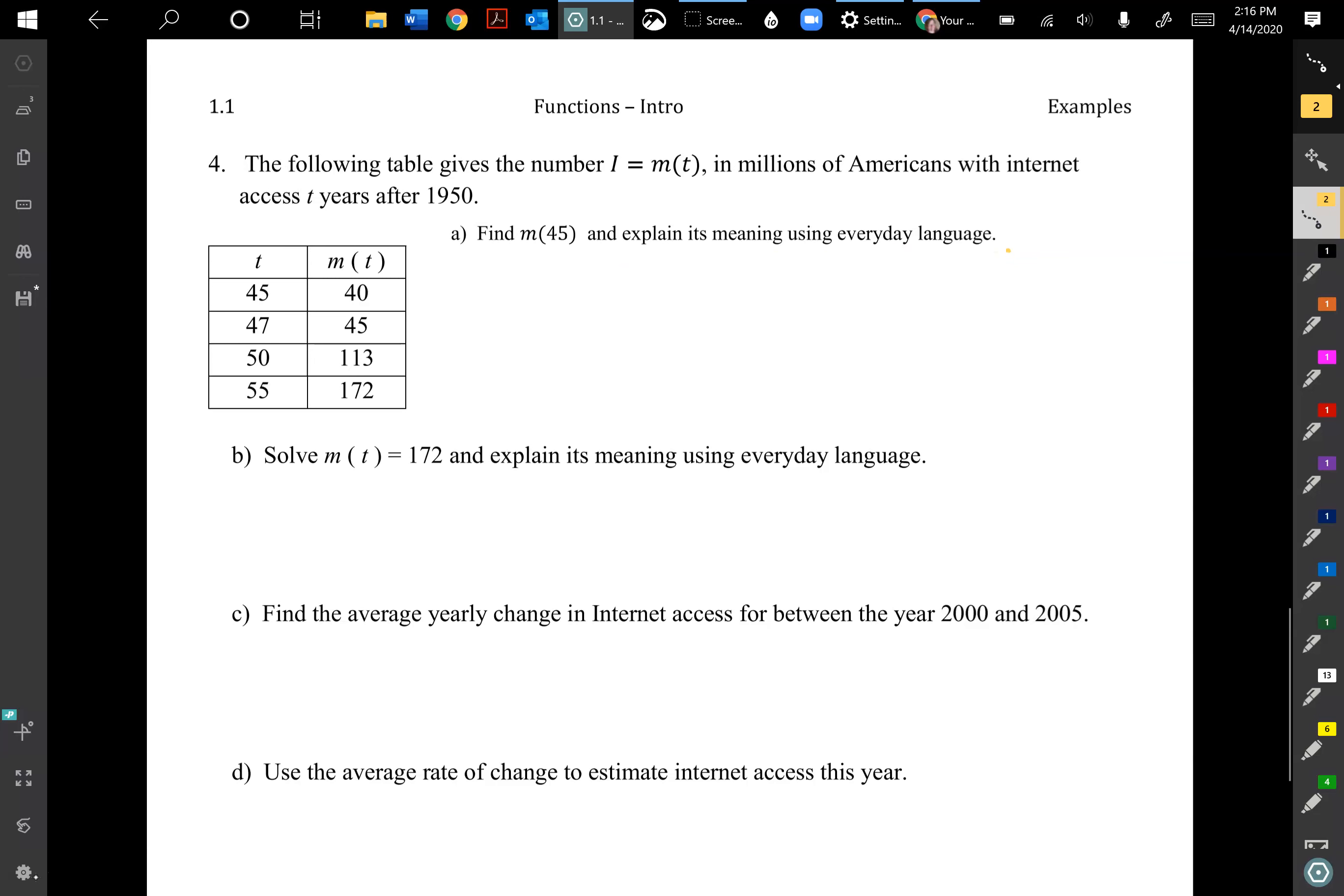Find m(45) and explain its meaning using everyday language. I want you to try that one. You're going to look over here, make sure you pay attention to the headers to know that they're not switched up. Sometimes that happens, you'll see one or two homeworks, maybe even a quiz where you have to really pay attention to what your headers are. So output may not be on the right always. You can also probably do m(t) = 172 and explain its meaning. It's very similar to what you did in the last problem except it's a table instead of a graph.